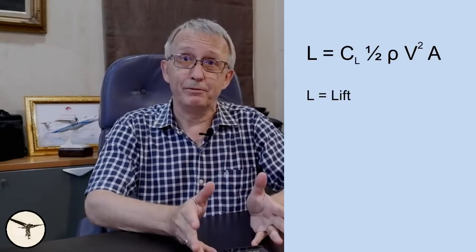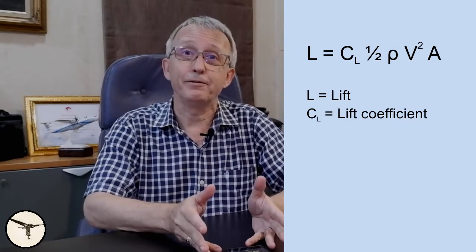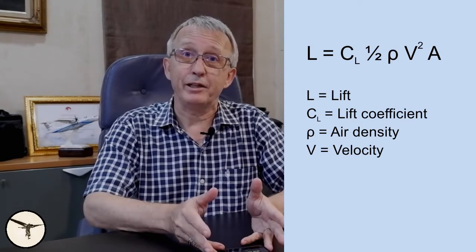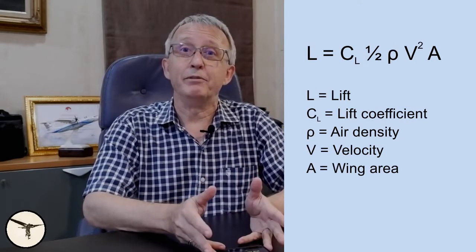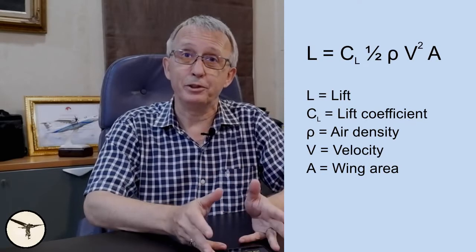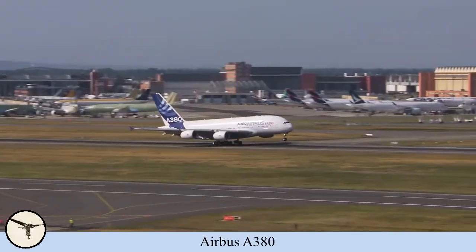This is the formula for lift. Lift is the sum of the lift coefficient multiplied with a half, multiplied with the density of the air, multiplied with the velocity of the airplane squared, and multiplied with the wing area. Today I will show with real numbers how the formula works. As examples, I will use the Cessna 172 and the Airbus 380. Despite their different size, they both follow the same physical laws, and the formula for lift works equally well for both.